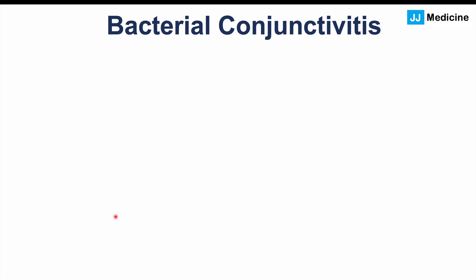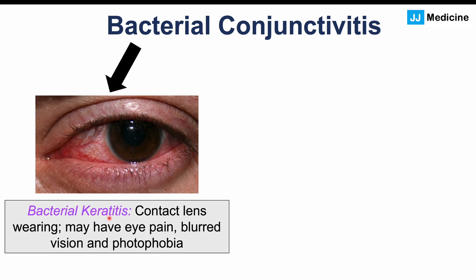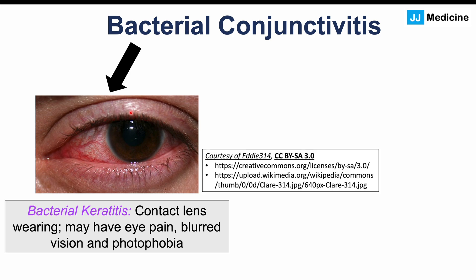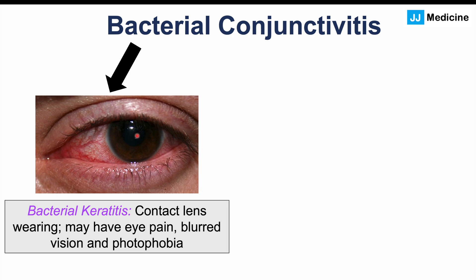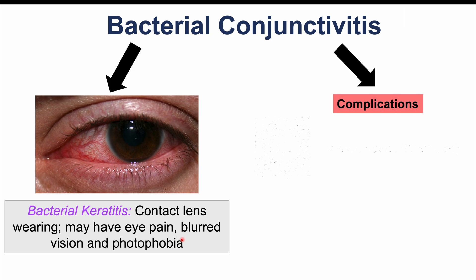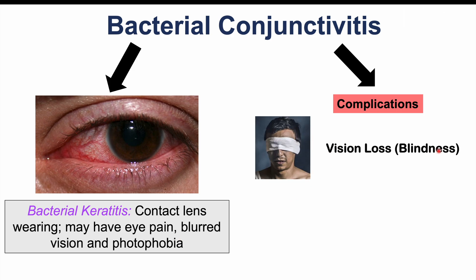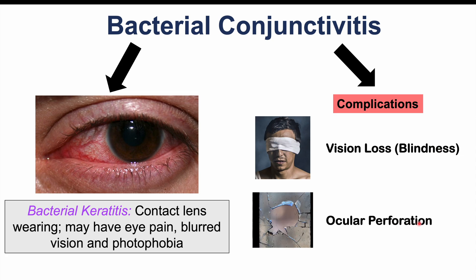Having bacterial conjunctivitis can lead to several complications. One is bacterial keratitis, which is an inflammation of the cornea — the layer overlying the pupil and iris through which light is focused. This more often occurs in patients who wear contact lenses. Patients with bacterial keratitis may have eye pain, blurred vision, and photophobia, which is sensitivity to light. Other complications include vision loss, blindness, and ocular perforation — holes that can occur in the eye.